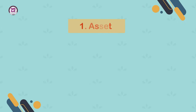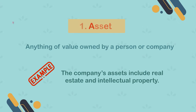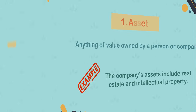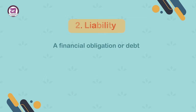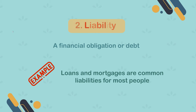1. Asset. Anything of value owned by a person or company. Example: the company's assets include real estate and intellectual property. 2. Liability. A financial obligation or debt. Example: loans and mortgages are common liabilities for most people.